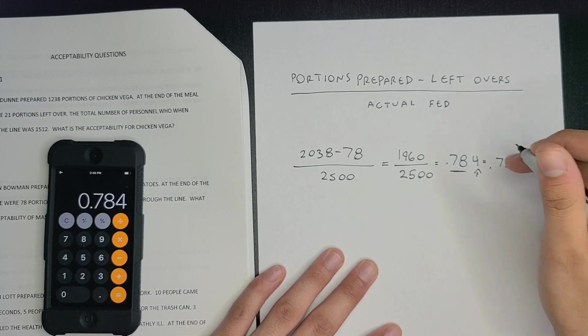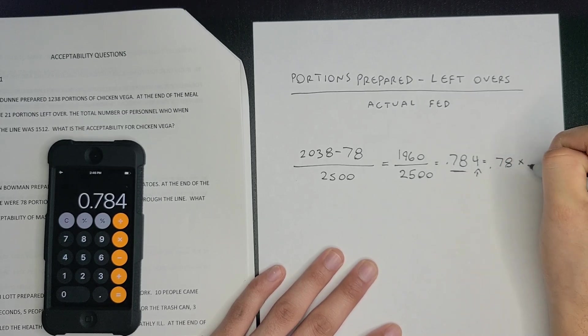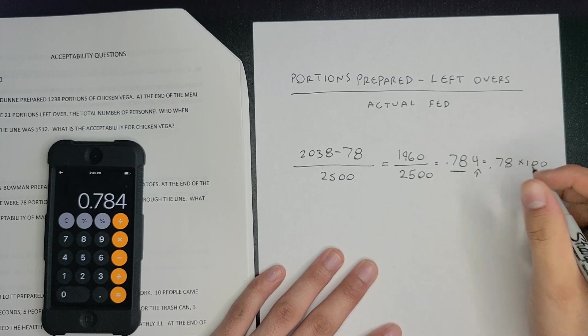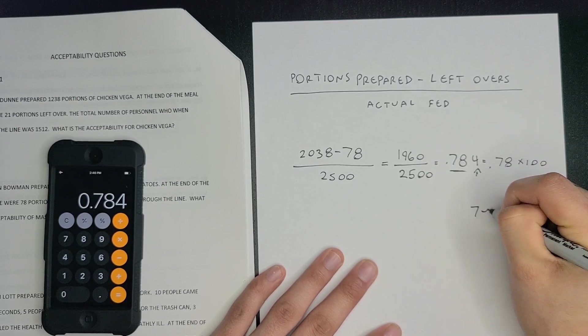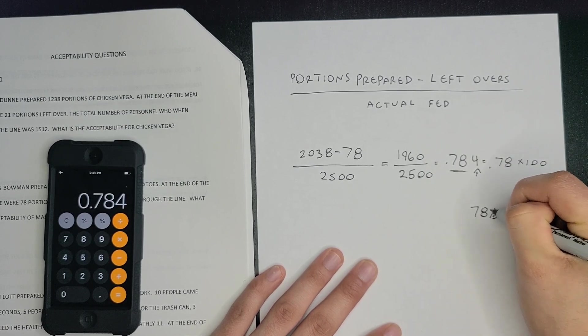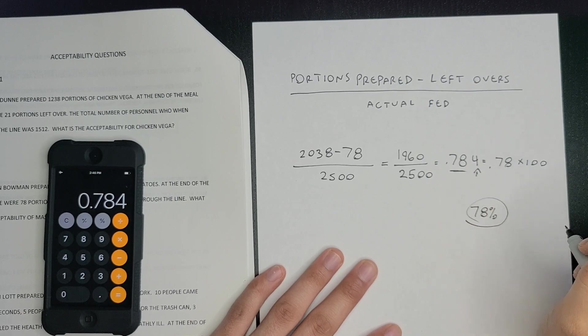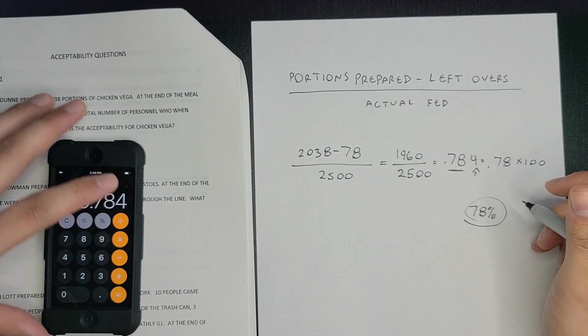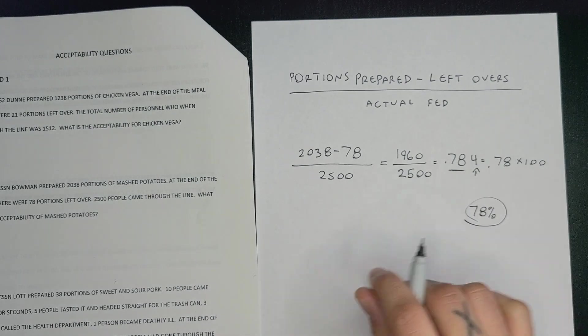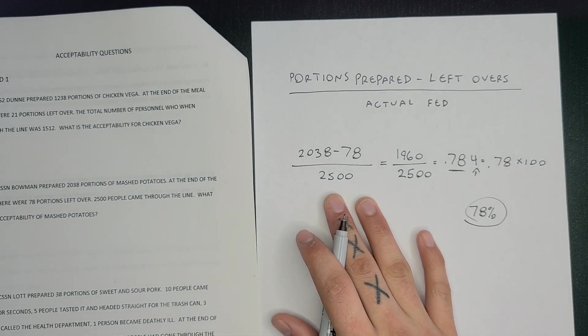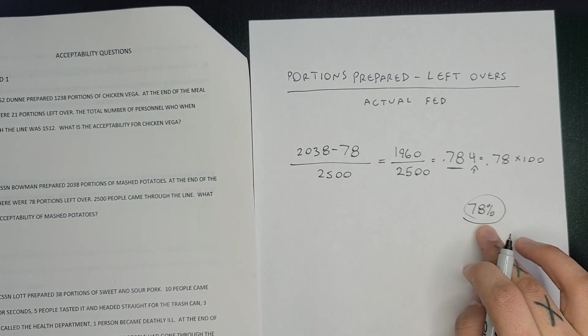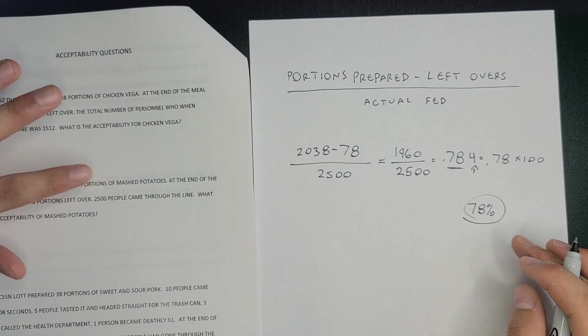is always going to be a percentage, so you multiply this number by 100 and you get 78%. That's your final answer. Out of the 2500 people that went through the line, only 78% of the people got the mashed potatoes.